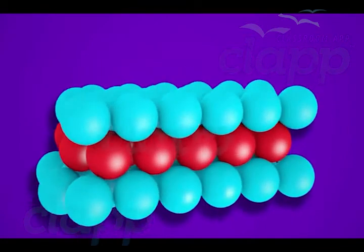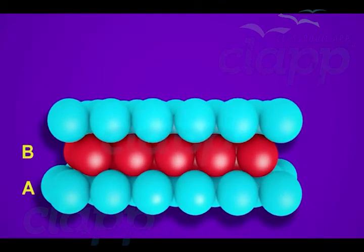When arranged in this way, spheres of the third layer align exactly with the spheres of the first layer. So the third layer can also be named as A type.